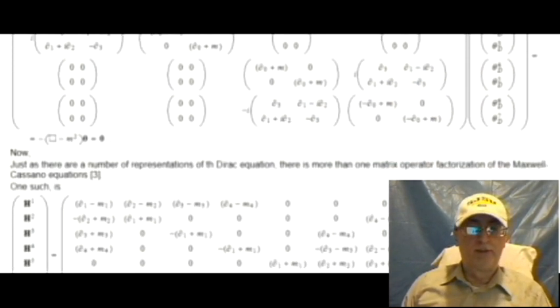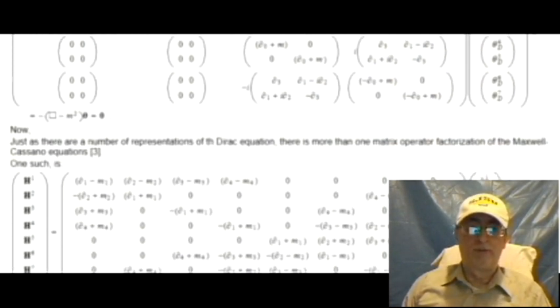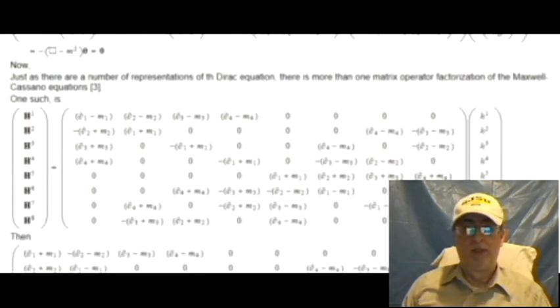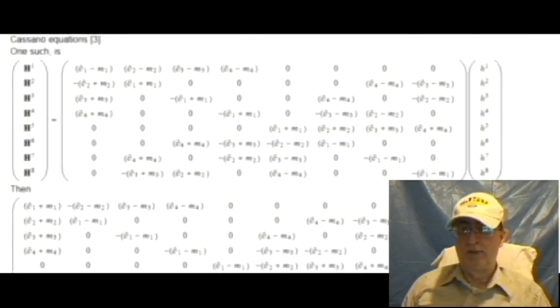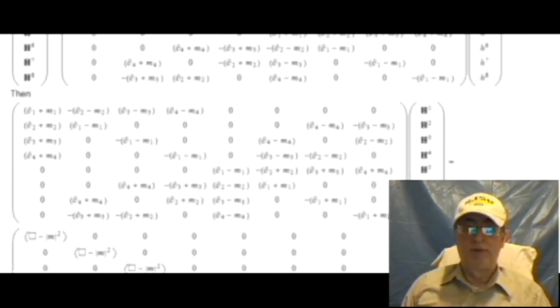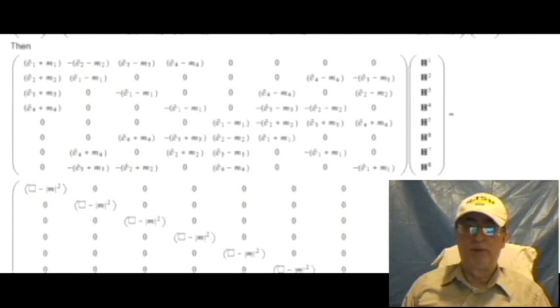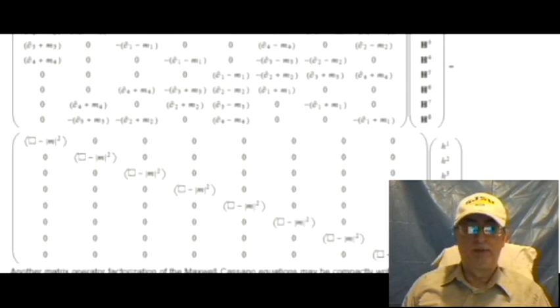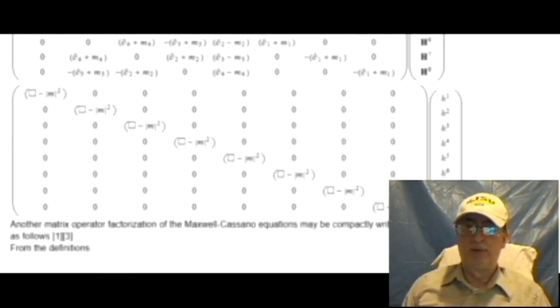Just as there are a number of representations of the Dirac equation, there is more than one matrix operator factorization of the Maxwell-Casano equations, reference 3, although all are equivalent. One such is shown here. Another matrix operator factorization of the Maxwell-Casano equations may be compactly written from references 1 and 3 as follows.